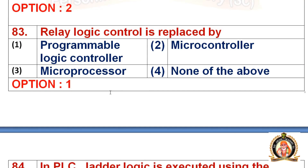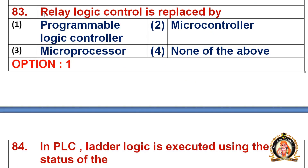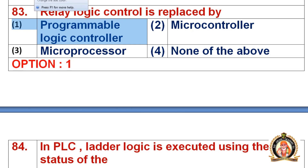Move on to the 83rd question: relay logic control is replaced by dash. The first option is programmable logic controller, the second is microcontroller, the third is microprocessor, and the fourth is none of the above. The right option is the programmable logic controller — the first option — for the 83rd question.